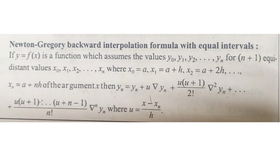Statement: Y equal to f of x, that is one function. The values are Y0, Y1, Y2, and so on, Yn — how many equidistance corresponding values X0, X1, X2, and so on Xn. Newton's Backward Interpolation Formula: Yu equal to Yn plus u nabla Yn, where u = (x − Xn) / h.